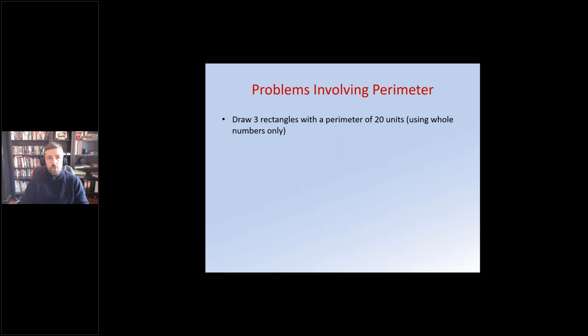We can improve on task selection to get students to really understand what the perimeter is. There are different problems involving perimeter where certain information is missing and students have to identify that information first. For example, they need to recognise that if the total length across is 15 meters and one part is 4 meters, then the remaining part must be 11 meters. This gets students to engage more with the task and understand a bit more.